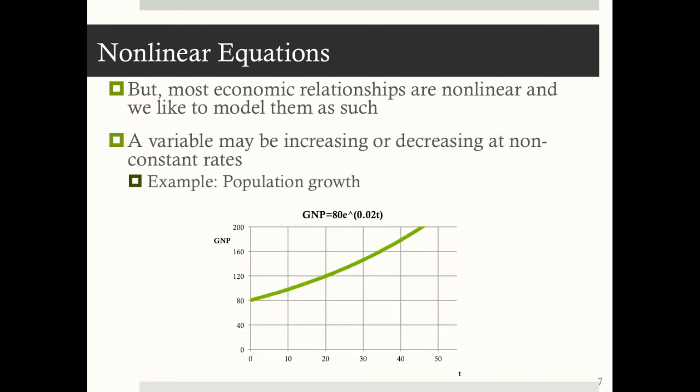And a variable may be increasing or decreasing at non-constant rates. So if we look at this population growth model again, but close up, we can see that if, for example, time this x variable were to increase by 20, GNP would increase by 39.4, which gives us a slope between these two points, these two ordered pairs of 1.97.